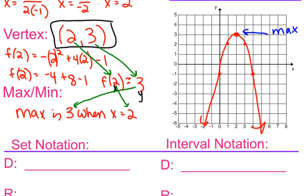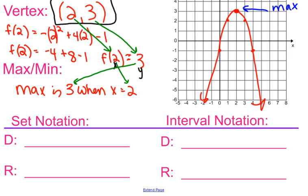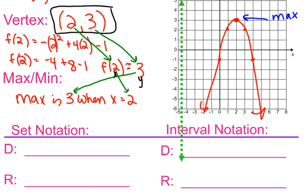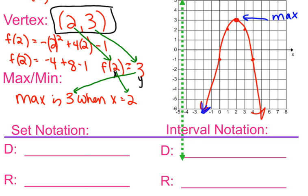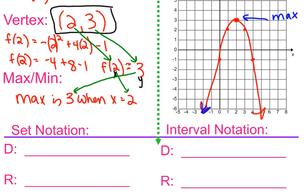For the domain of this parabola, I use a vertical line. Am I touching at negative infinity? Yes, because the arrows go on forever. I go all the way to positive infinity without stopping. So my interval notation is (-∞, +∞), and my set notation is: values of x such that x belongs to all reals.